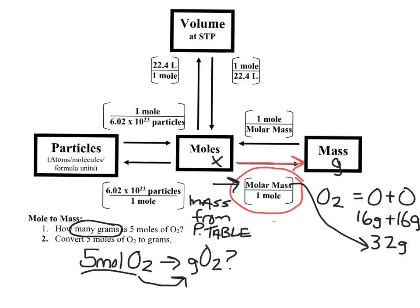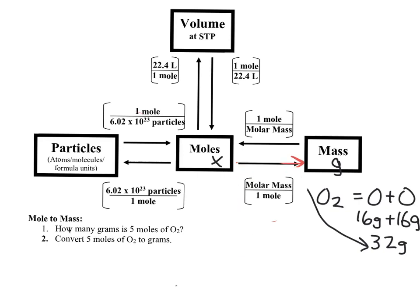If it ended up being chlorine gas, Cl2, you would add chlorine plus chlorine. For water, H2O, it would be two hydrogens plus one oxygen — the masses from the periodic table give you the molar mass. Let's set up the problem. Starting with 5 moles of oxygen, we put molar mass over one mole. MOL is the shorthand form for moles in chemistry.